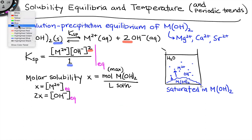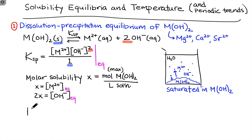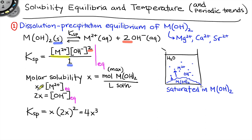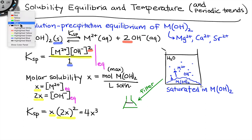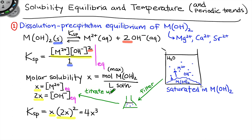We can write an expression for KSP in terms of the molar solubility by substituting these X expressions for the concentration terms. What we end up with is X times the quantity (2X) squared, or simplifying, 4X cubed. This relates the molar solubility X to the value of KSP. To actually measure KSP, we need to measure one of these concentrations — M2+ or OH- — and apply stoichiometry to determine the other. We are going to measure the OH- concentration through acid-base titration: take a portion of the saturated solution, filter off the excess solid, and then titrate that portion with acid.